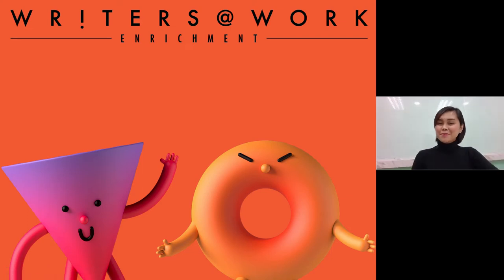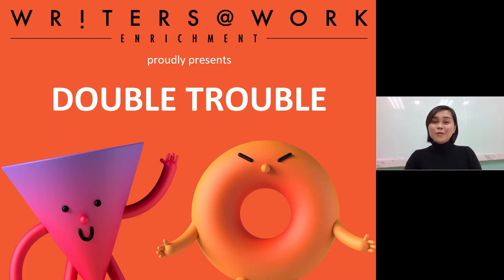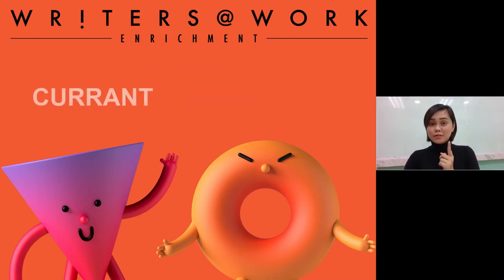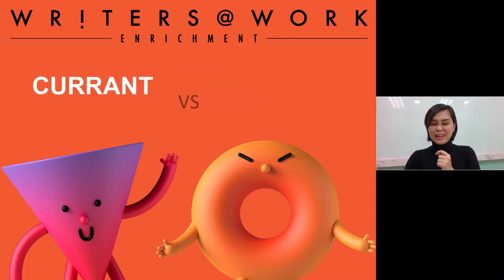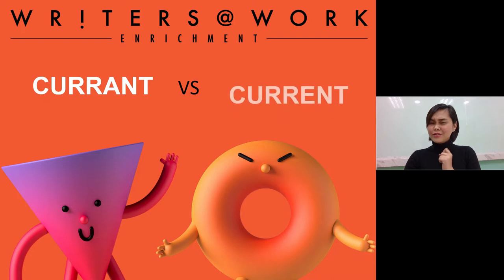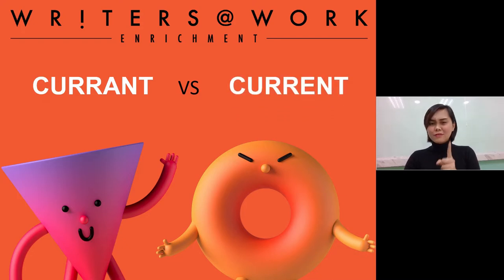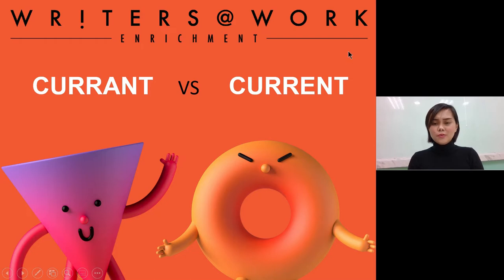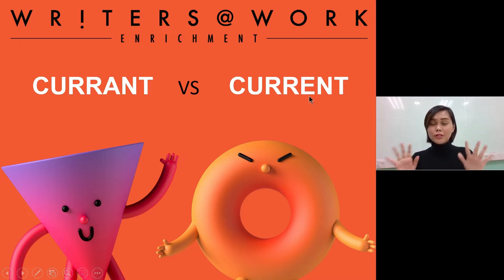Hello everyone, this is Teacher Mitsuko from Writers at Work and it's time for another episode of Double Trouble. Do you know the difference between currant and current? They have a one-letter difference — one has a letter A and one has a letter E as their last vowel. Let's discuss how these two words are different from each other.